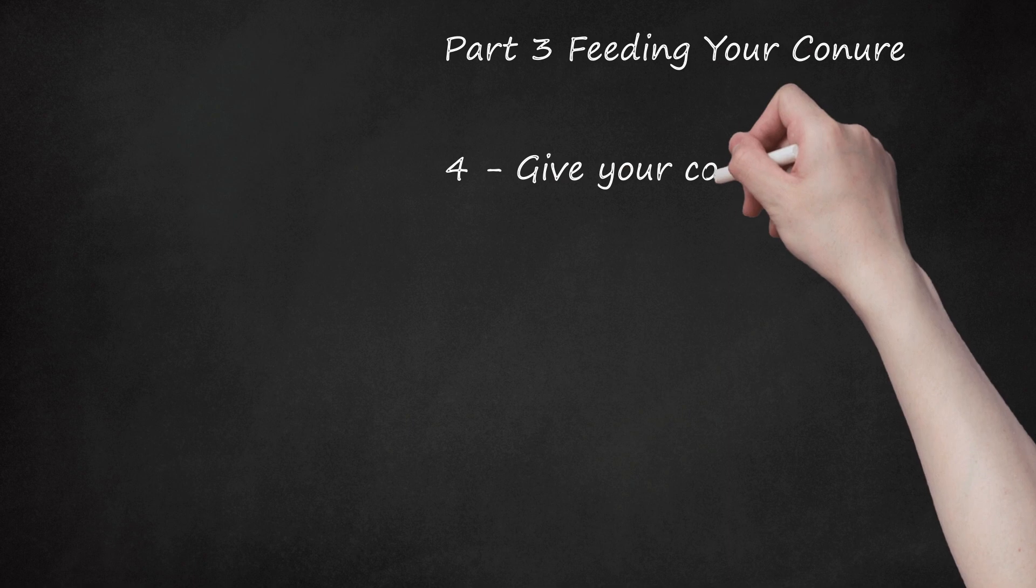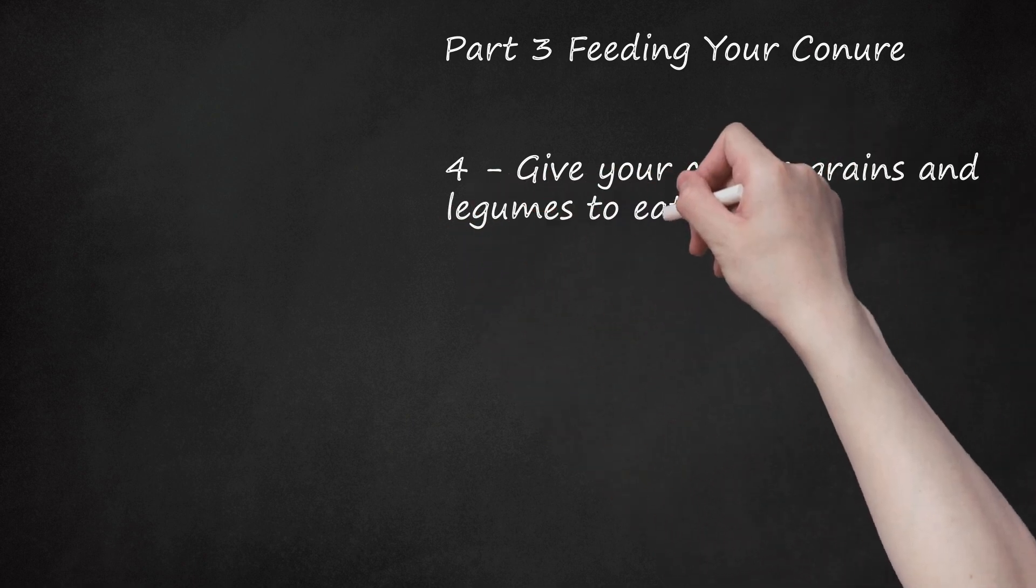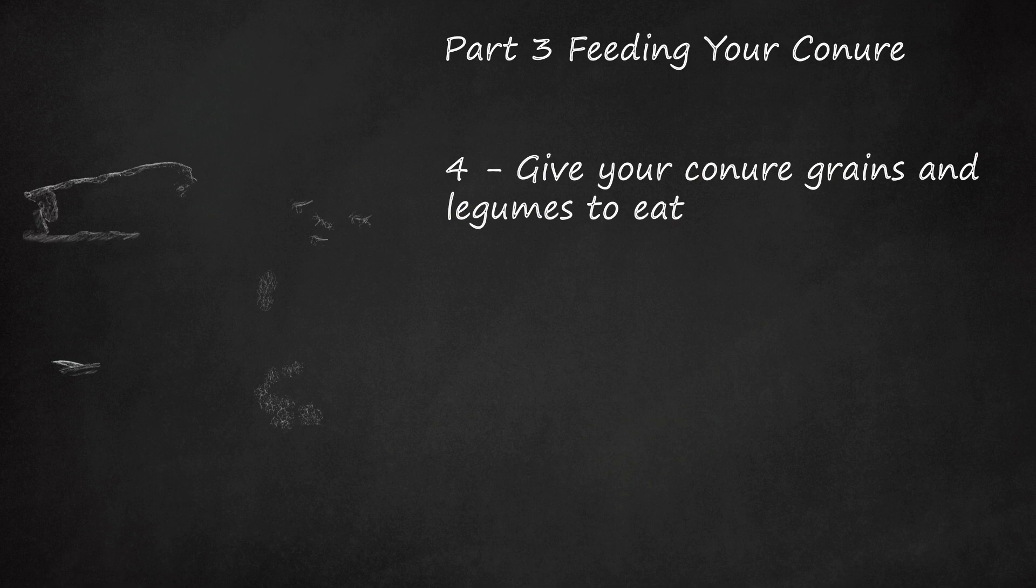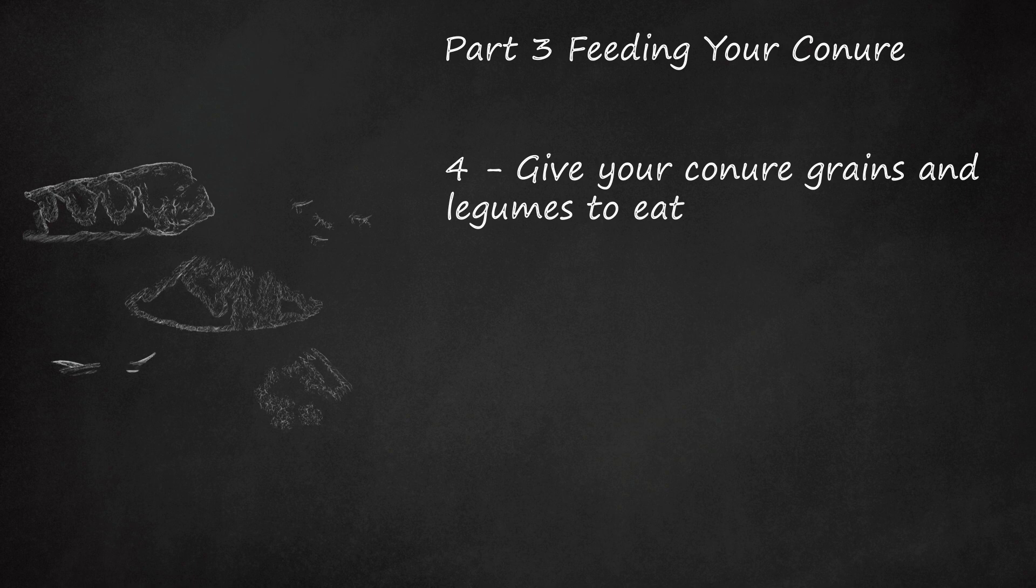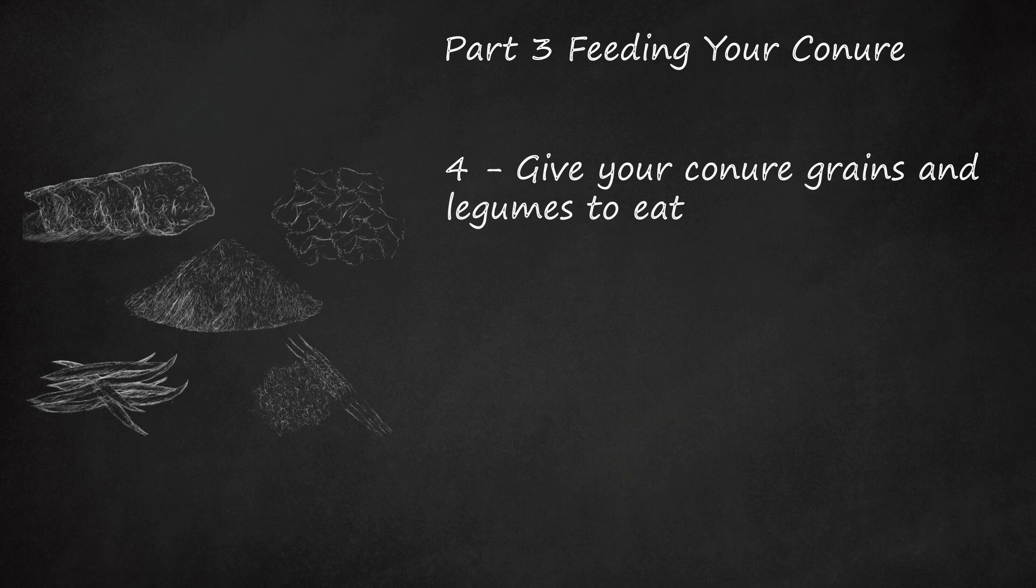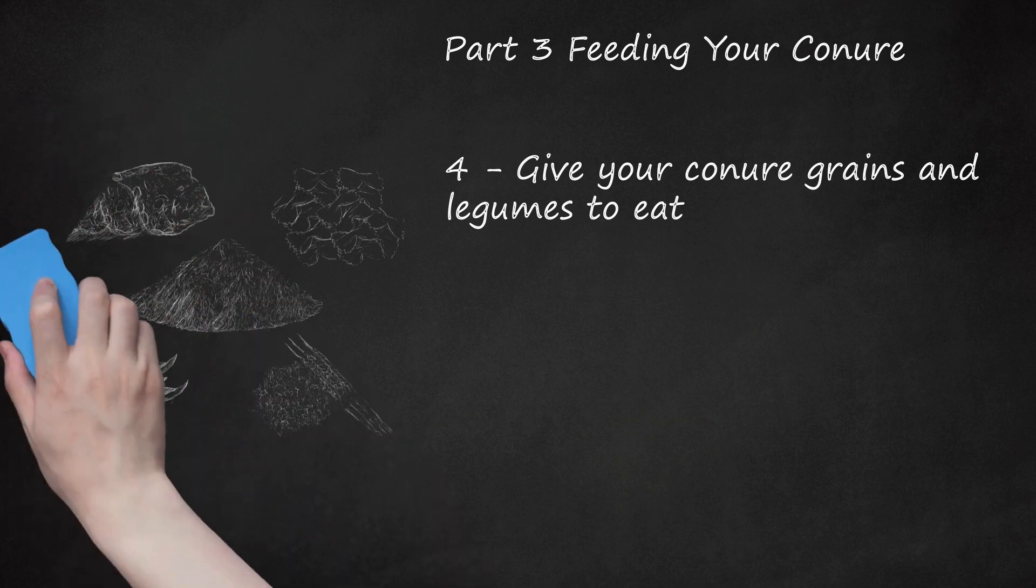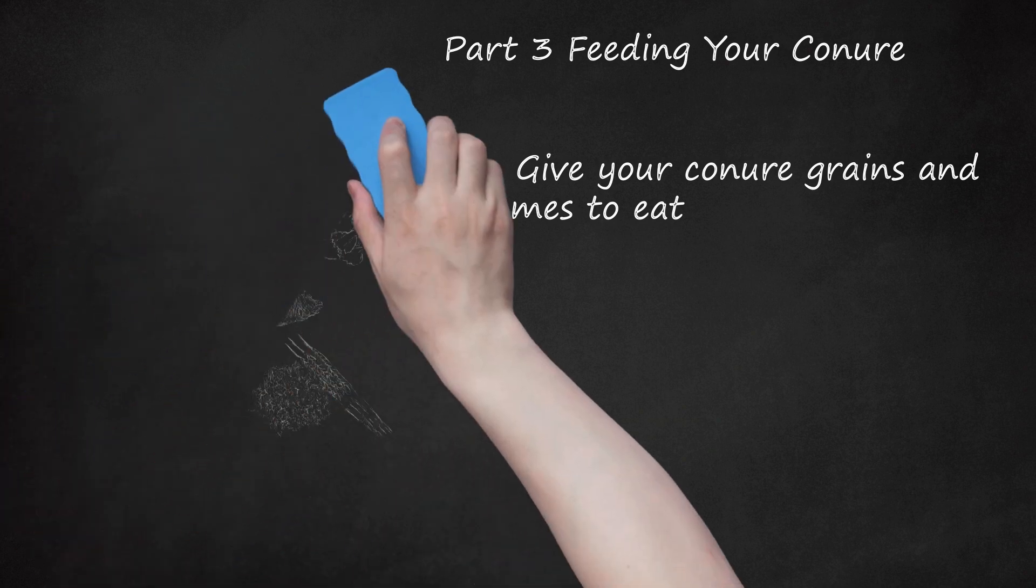Give your conure grains and legumes to eat. In addition to nuts, grains and legumes are mainstays of a conure diet. There are many types of healthy grains you can feed your conure, such as cooked brown rice or barley, as well as cereal, pasta, and crackers. Conures cannot break down sugar very well, so avoid sugary cereals. Examples of legumes are lentils and different types of beans, like green beans and black beans. Legumes and grains have vitamins, minerals, and fiber that are essential components of your conure's diet.